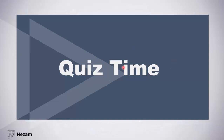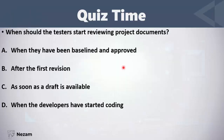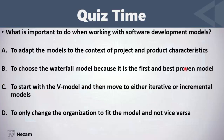Let's now solve some questions on this section. When should the testers start reviewing project documents? When they have been pre-signed and approved, after the first revision, as soon as a draft is available, or when the developers have started coding? Of course, we testers should review documents as soon as a draft is available.